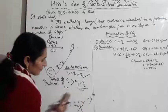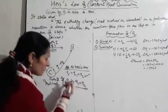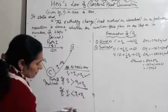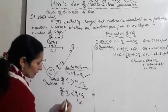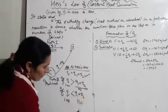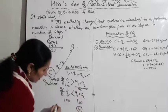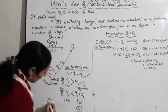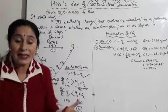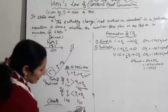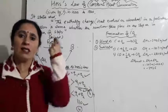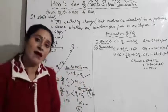Similarly, if Q is less than Q1 plus Q2 — say Q was 100 but the indirect path gives 110 — then we have created 10 kJ of energy, which is also against the First Law of Thermodynamics. In the first case we destroyed 5 kJ, in the second we created 10 kJ — both are impossible according to the First Law.